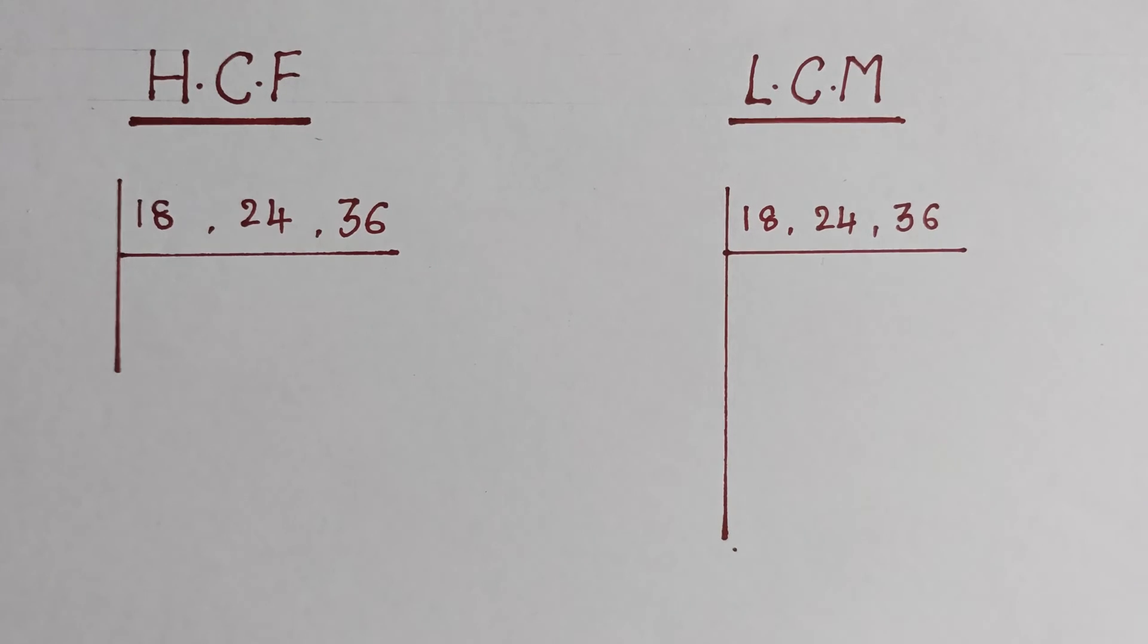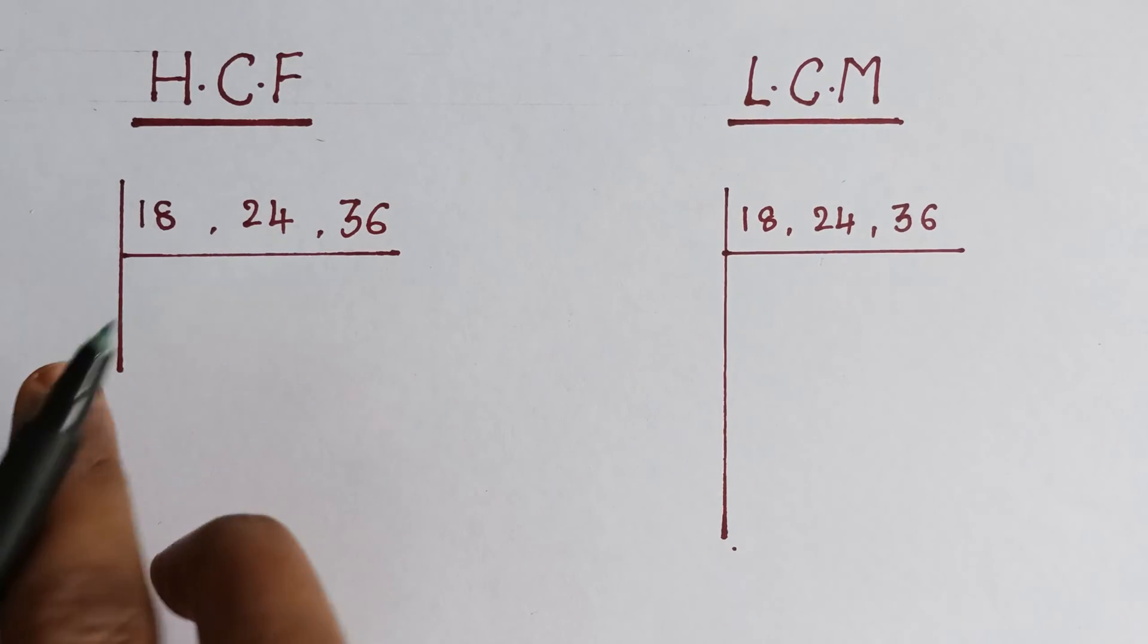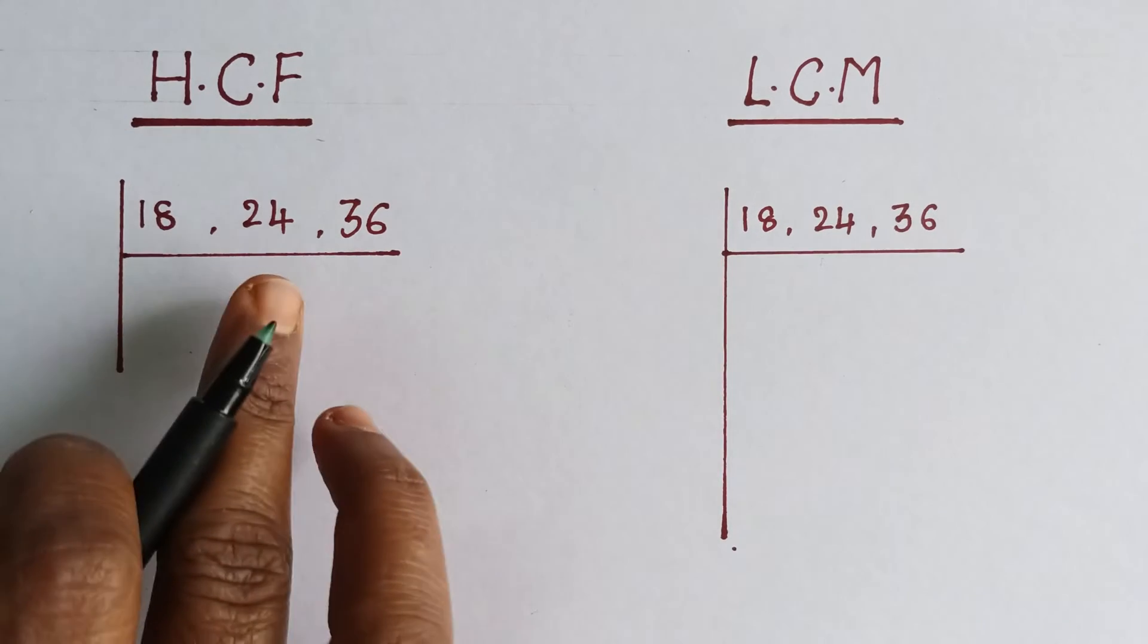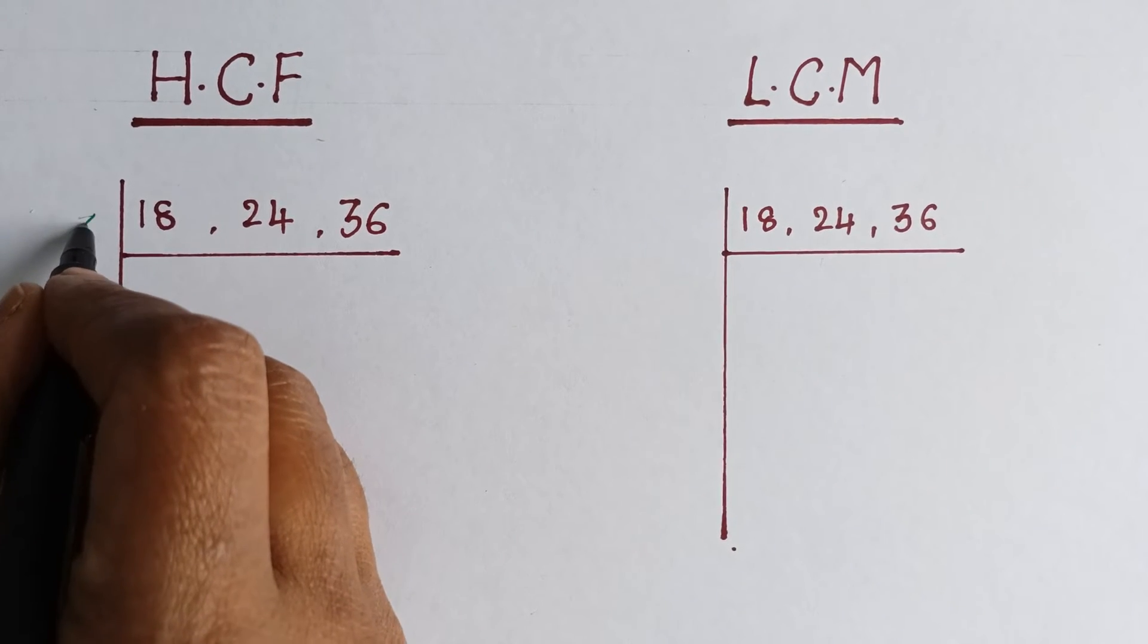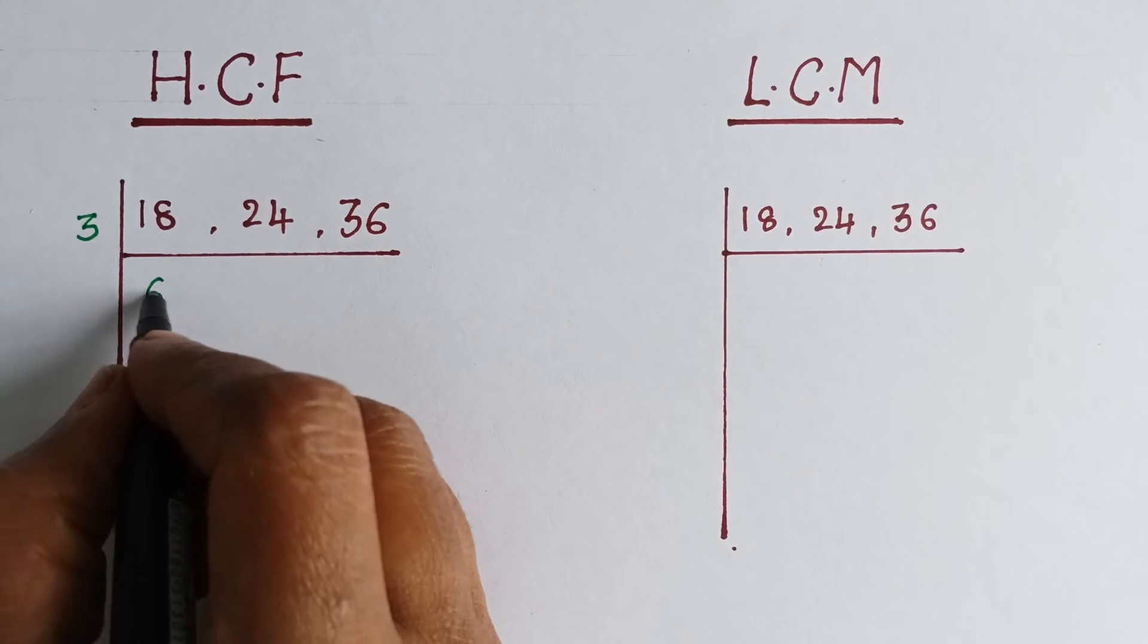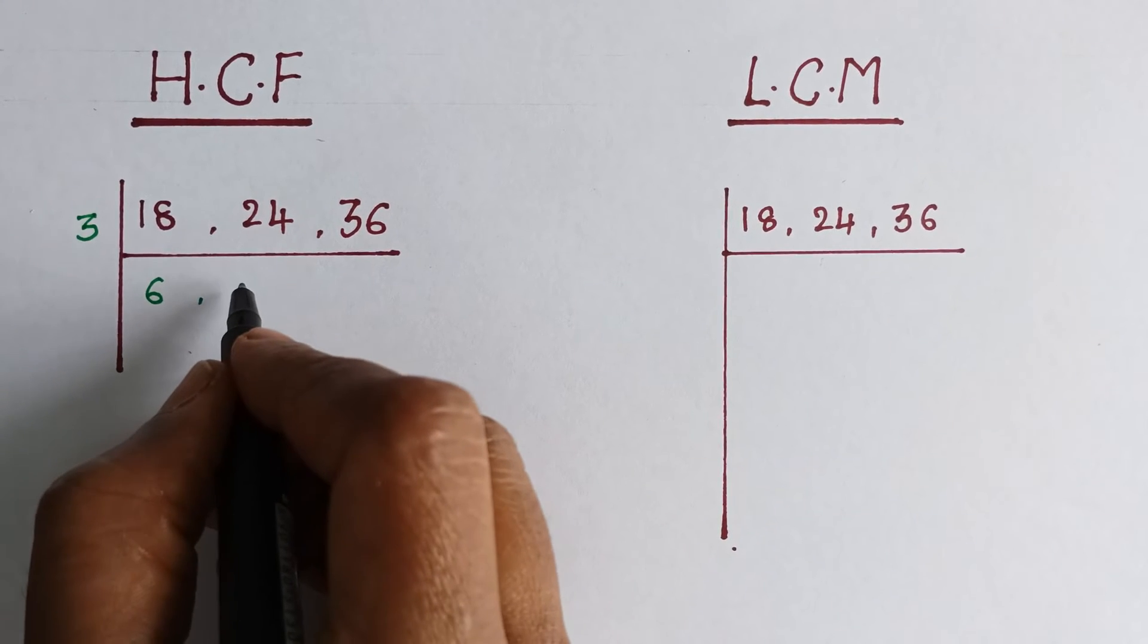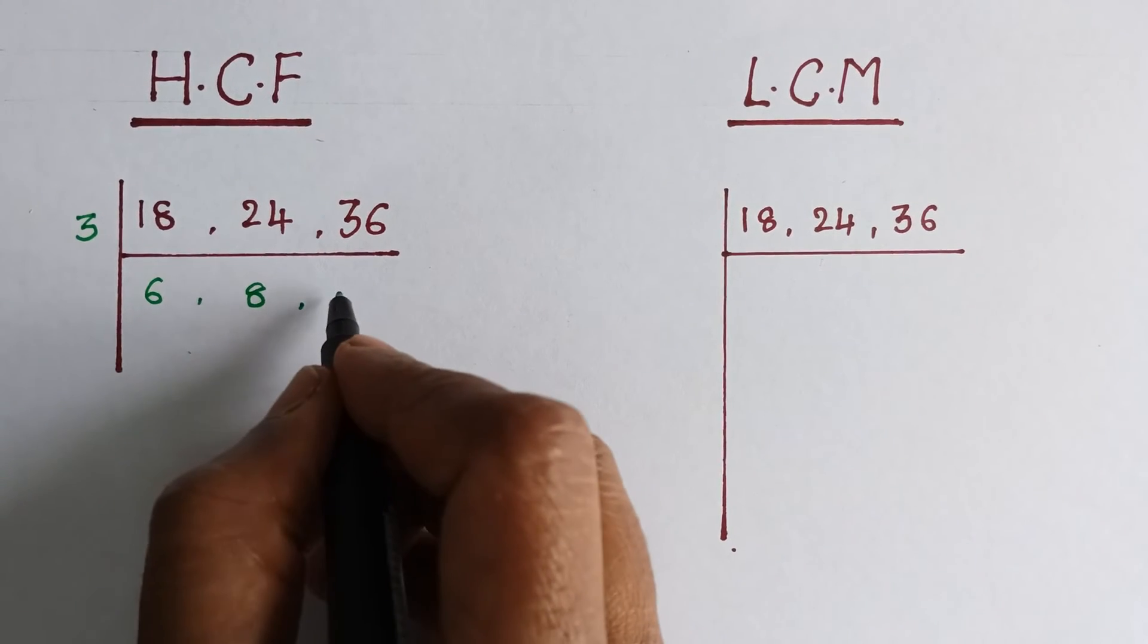There are 18, 24, and 36. Let's start with the 3 table, as 3 is a factor for each and every digit. So you can take 3: 3 times 6 is 18, 3 times 8 is 24, and 3 times 12 is 36.